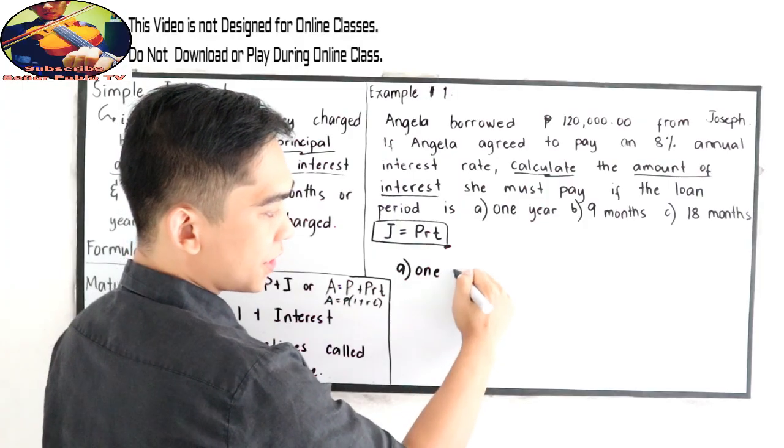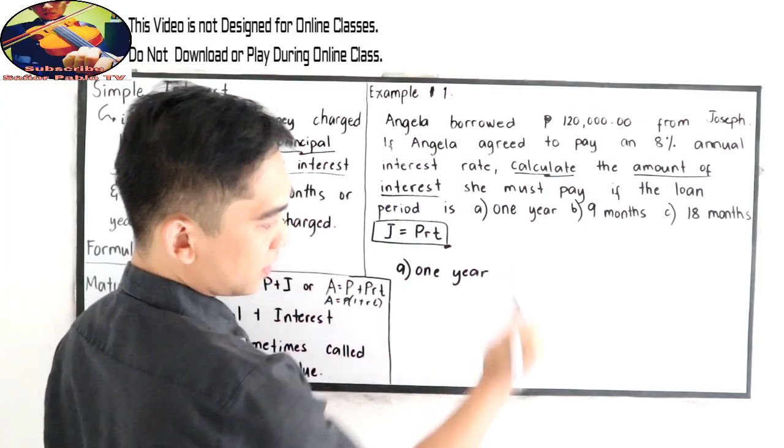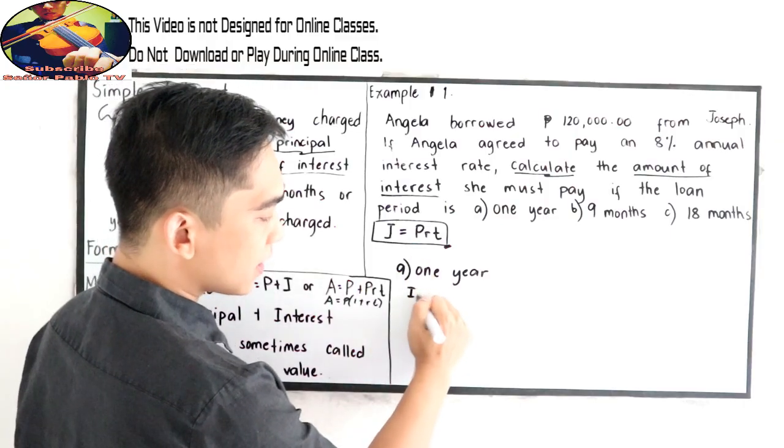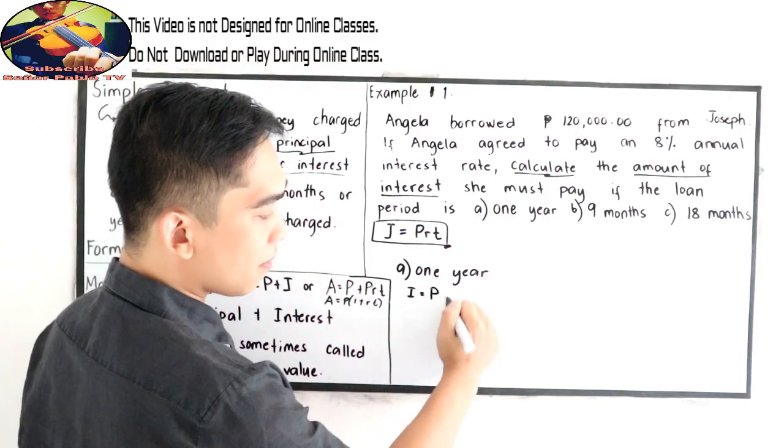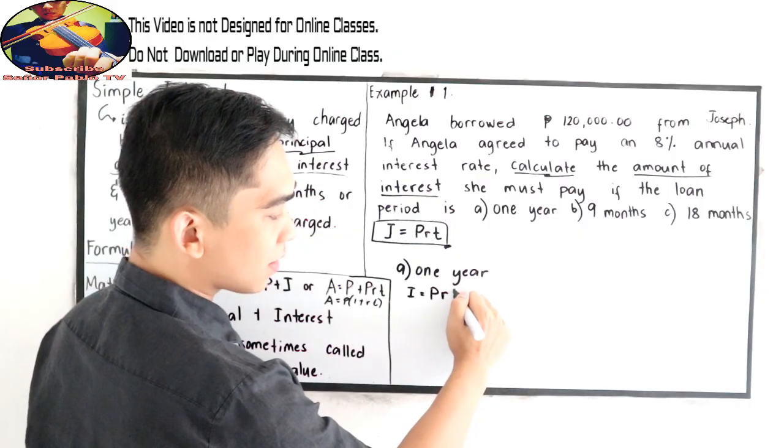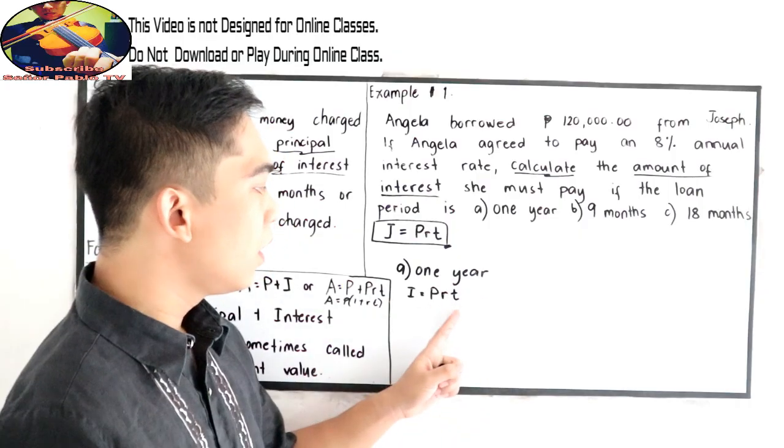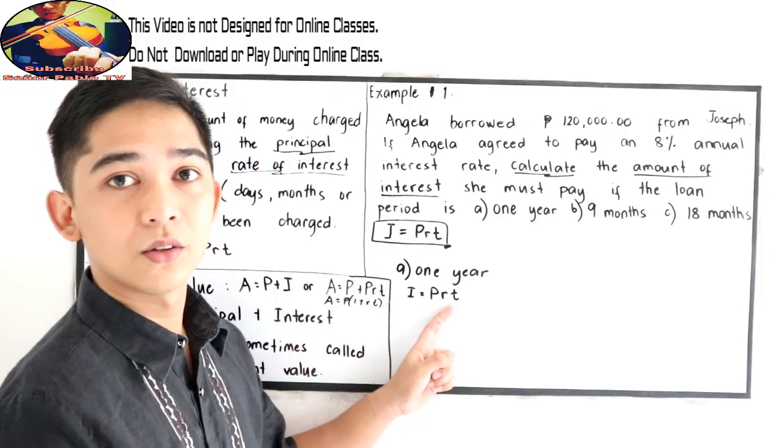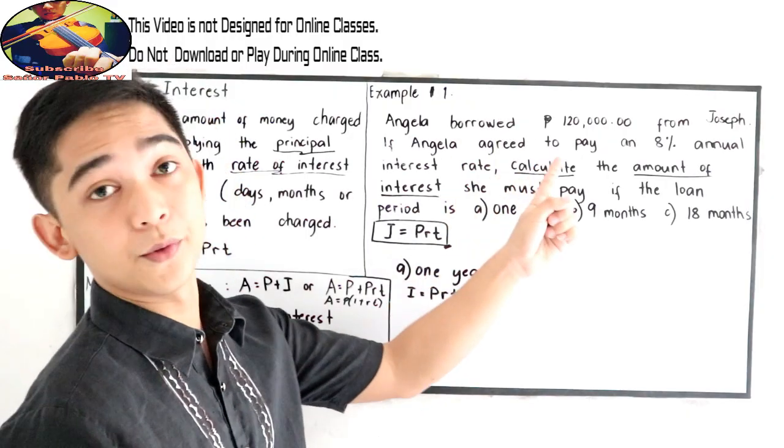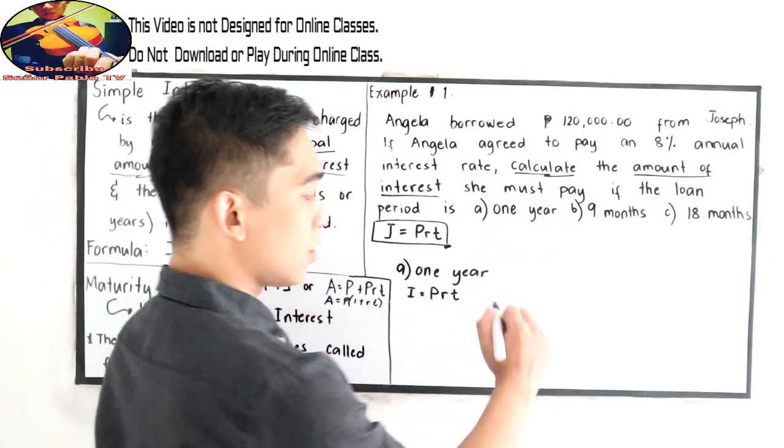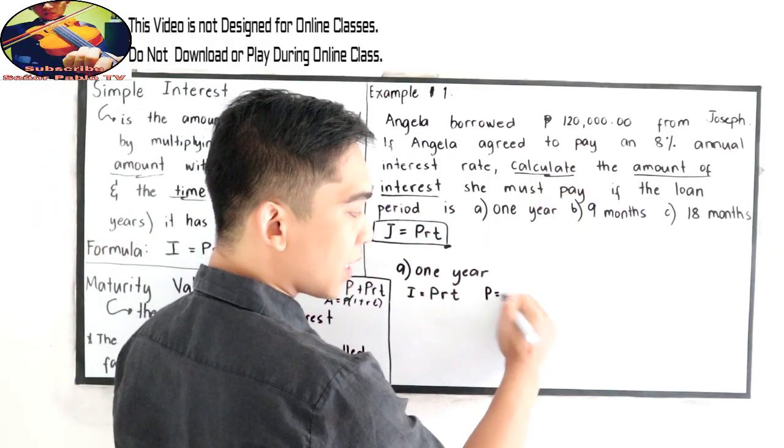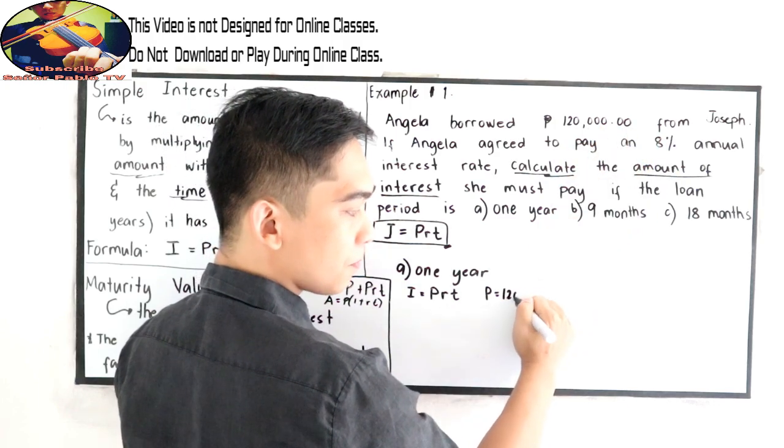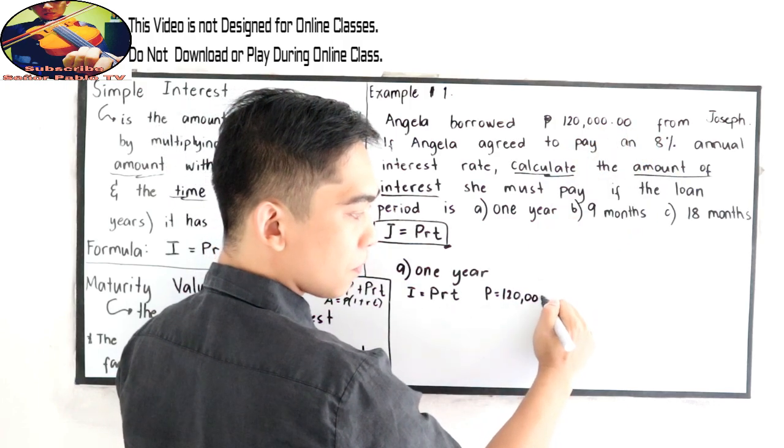So we have the formula. I is equal to principal amount, times the rate, times time. So let us first find the principal amount or the amount she borrowed from Joseph. So our principal amount is $120,000.